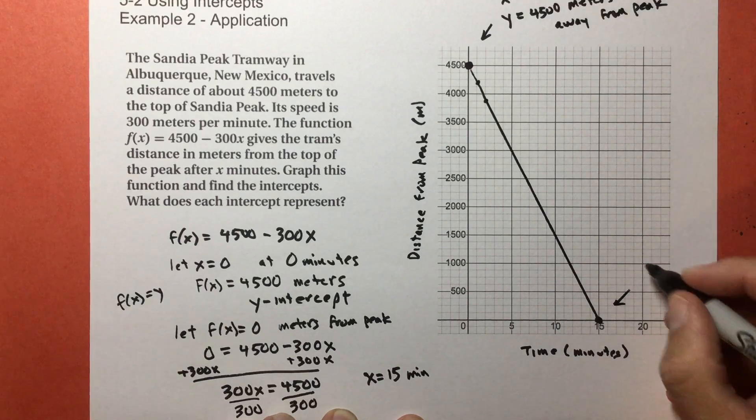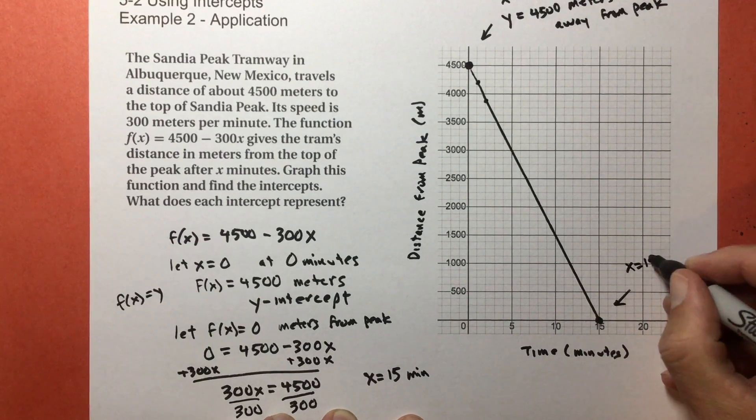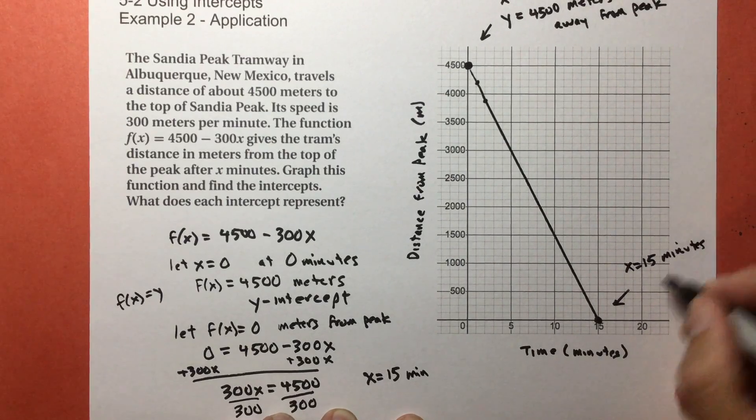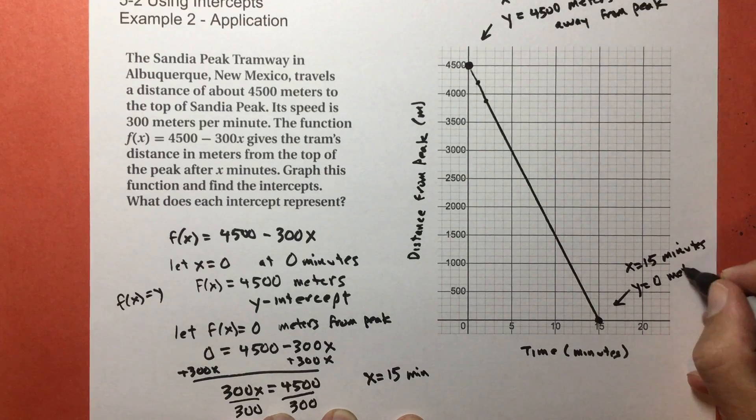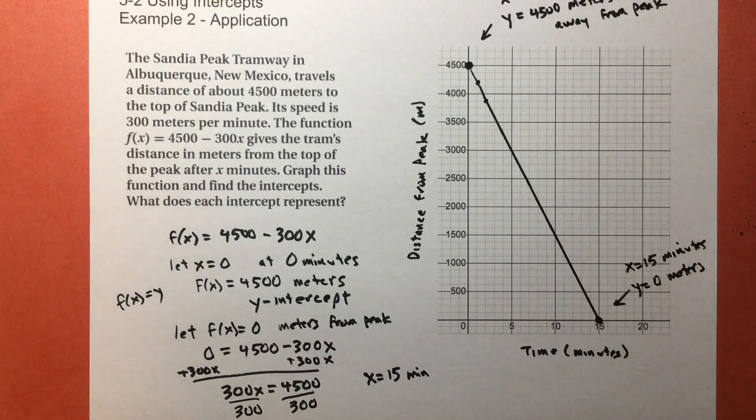Right here, x equals 15 minutes, and y equals zero meters, because you've arrived at the peak.